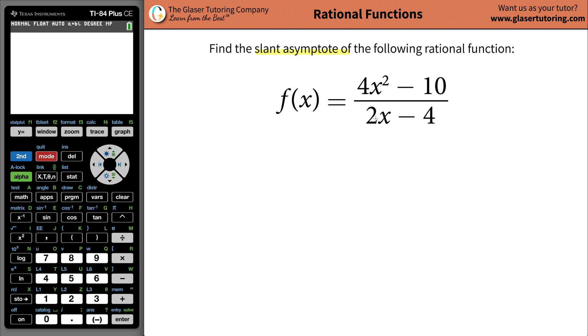And the way we're going to find that slant asymptote is by doing long division. I know, long division, we got to do long division here. So what we're going to do is set it up. Basically the numerator goes on the inside of this long division and the denominator goes on the outside.